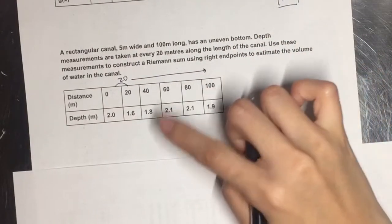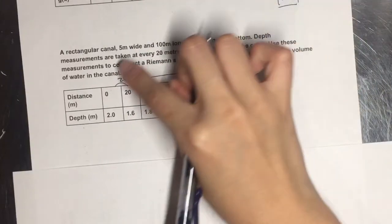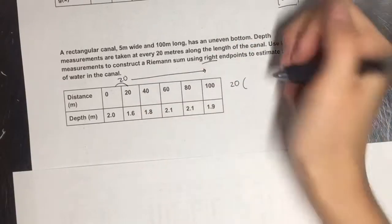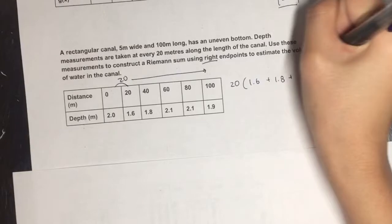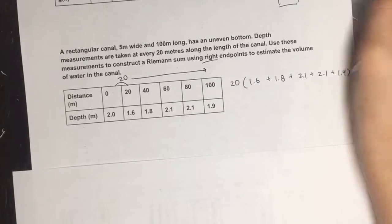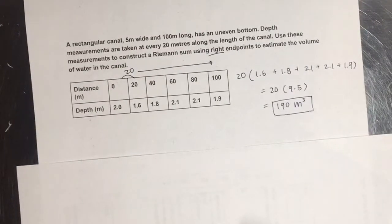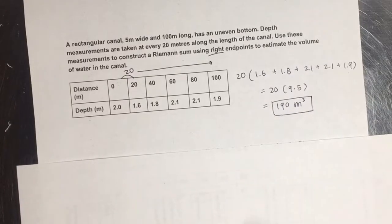We're going to be using the rightmost numbers. So basically this means we're using 1.6 all the way to 1.9. We're not using 2.0. You can leave it like that. But I took the liberty of calculating it and I got 190 meters cubed. Make sure you label it right.